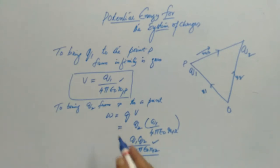And this work, as electrostatic force is conservative in nature, therefore this is stored in the form of potential energy and it is independent of path. We need not bother about in which path the Q2 is placed at this particular point.